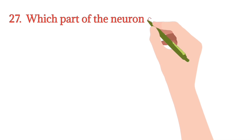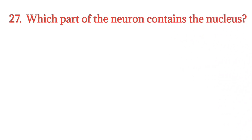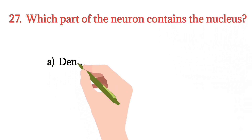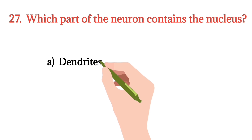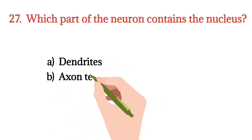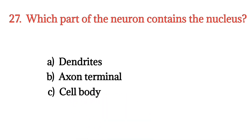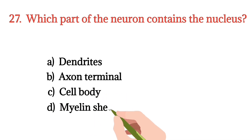MCQ number 27. Which part of the neuron contains the nucleus? Option A: Dendrites. Option B: Axon terminal. Option C: Cell body. Option D: Myelin sheath. The right option is Option C.